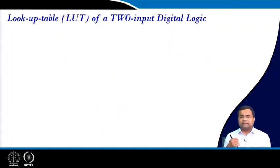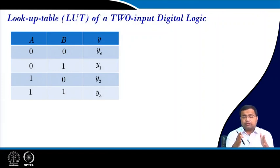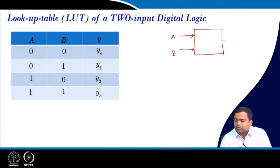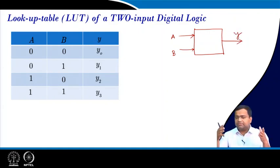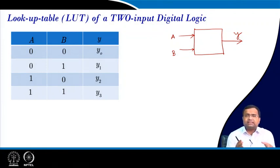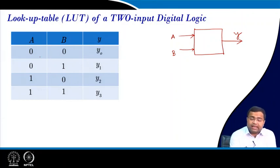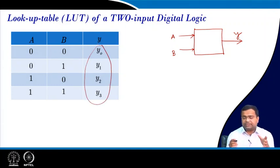Now if we go for a lookup table implementation, ultimately we want to write in terms of a lookup table. If we take a two-input logic where A and B are inputs and Y is the output, we know any Boolean algebra can be represented in a truth table. Depending upon the A and B values we can choose y0, y1, y2, y3, and that gives us what function we are going to represent.